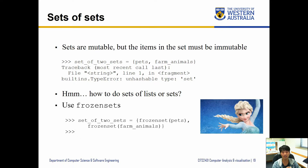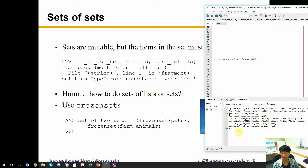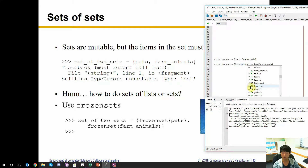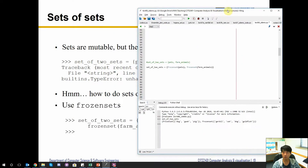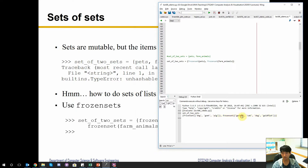There is a specific built-in function called 'frozenset' which takes in a set and converts it into an immutable set. Once converted, you can no longer change the content of that set. So we create frozen set versions of both sets, and if we run it there's no error. The set of two sets now shows both frozen sets correctly.